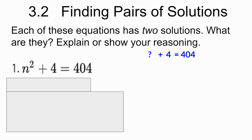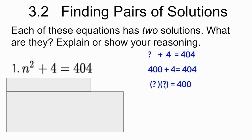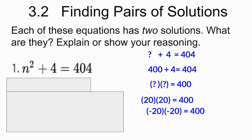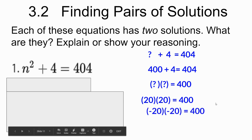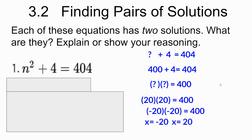Looking at this first one, we need to ask ourselves: what plus 4 equals 404? Well, 400 plus 4 is going to give me 404. So now I need to think: what number squared gives me 400? Something times itself gives me 400 — we could have 20 times 20, or we could have negative 20 times negative 20. So this has two solutions: one is 20, and one is negative 20.